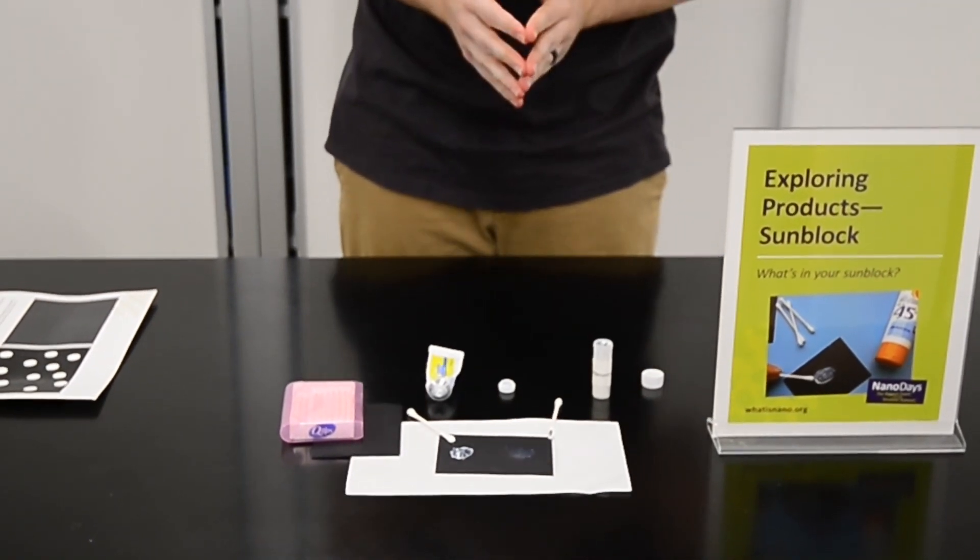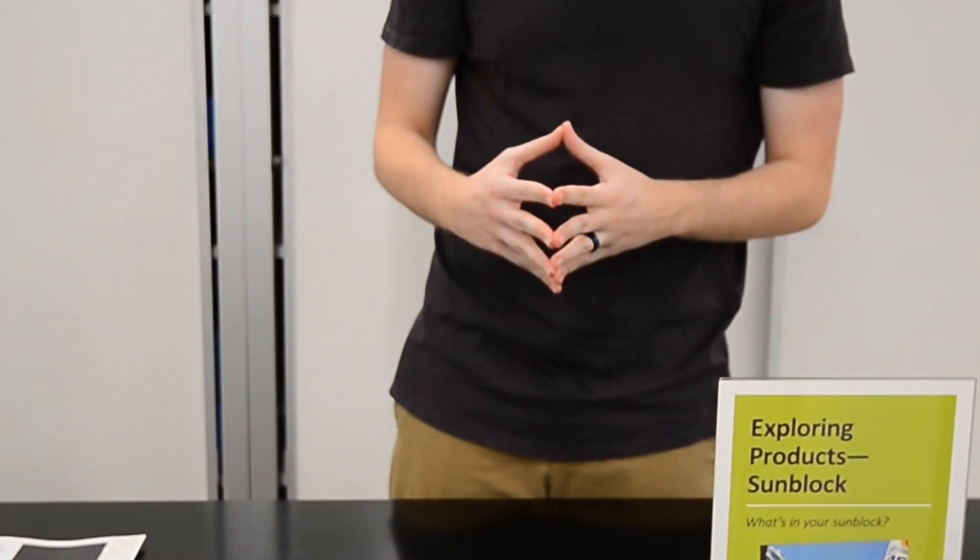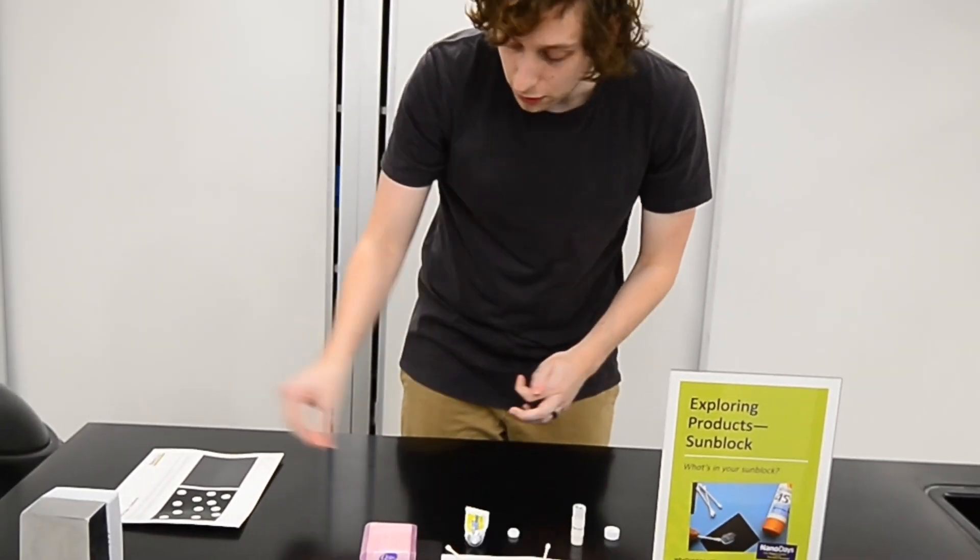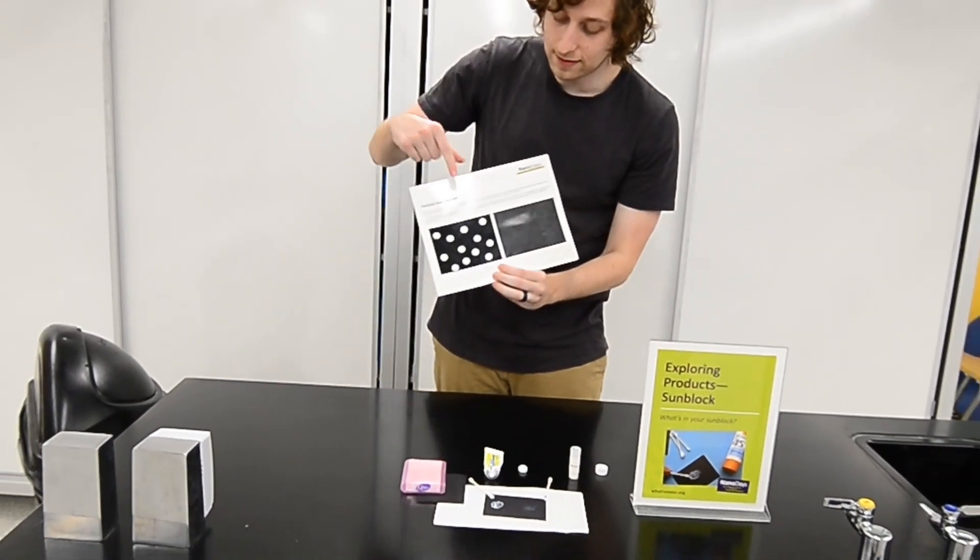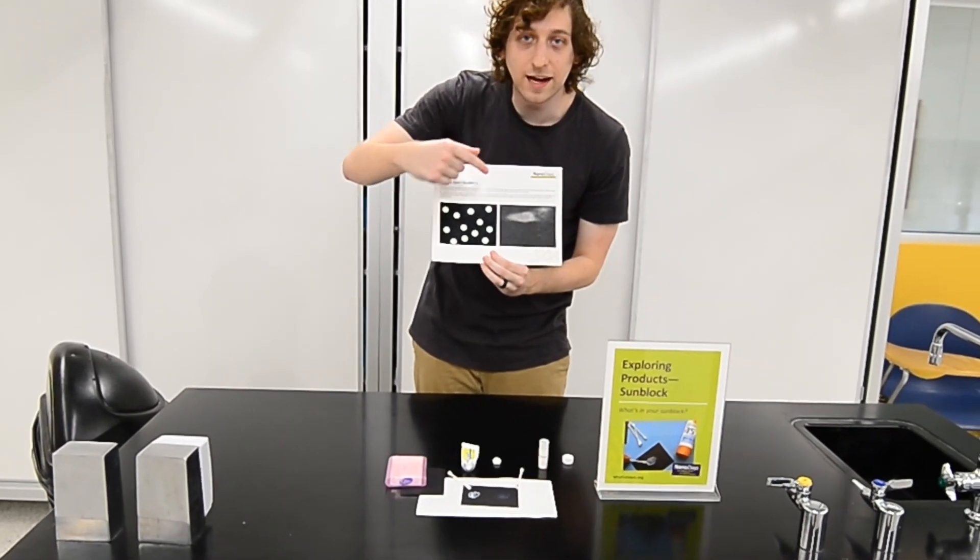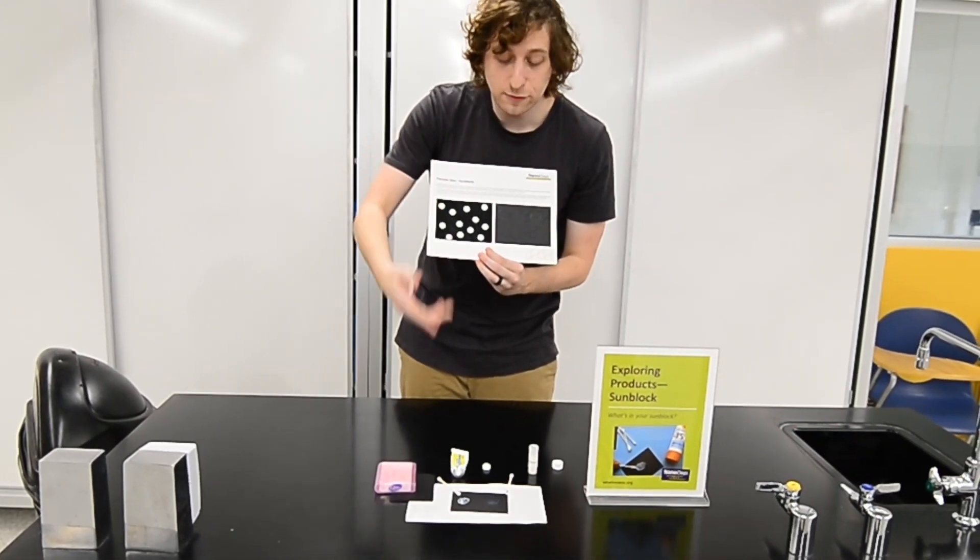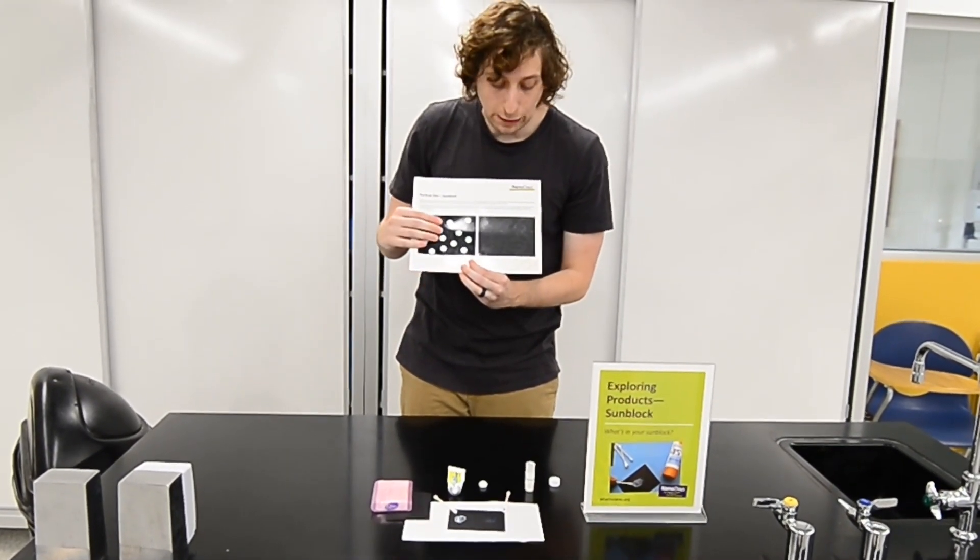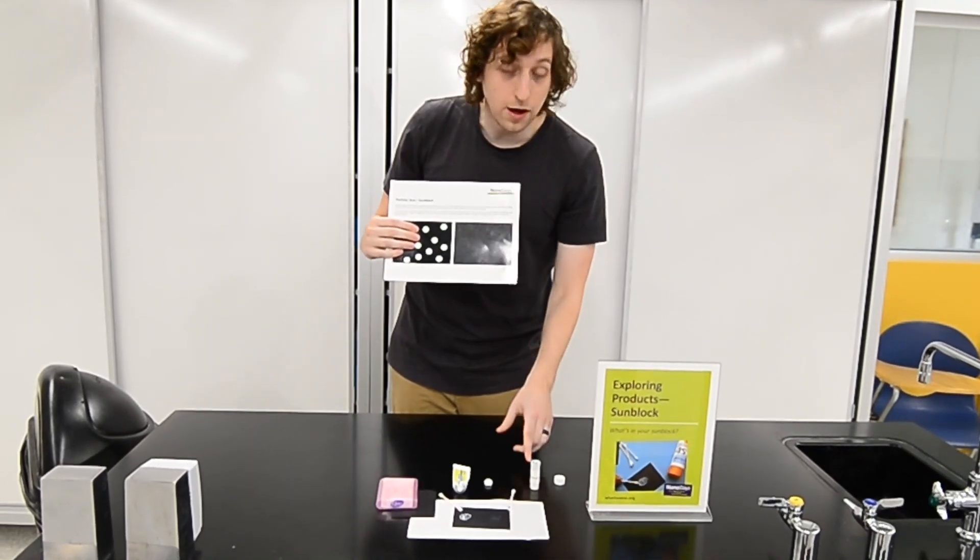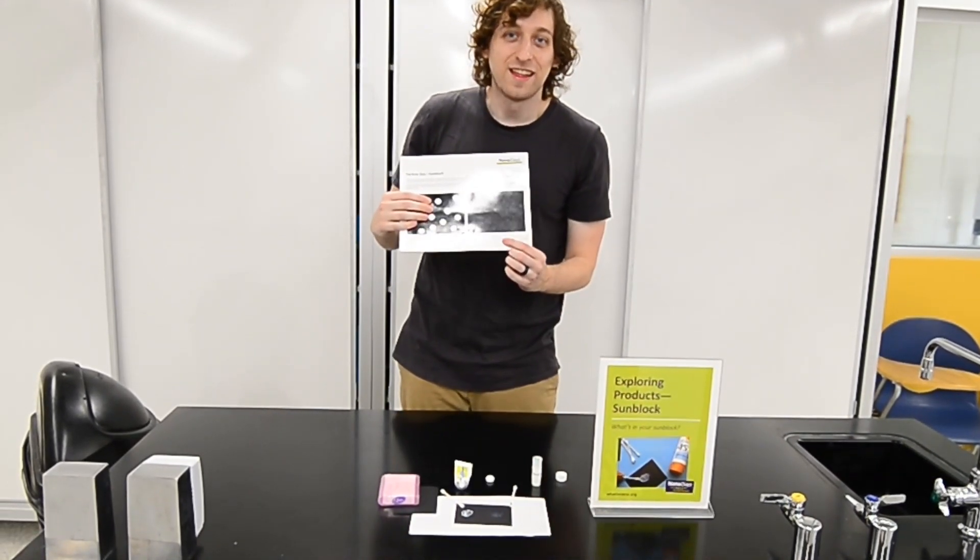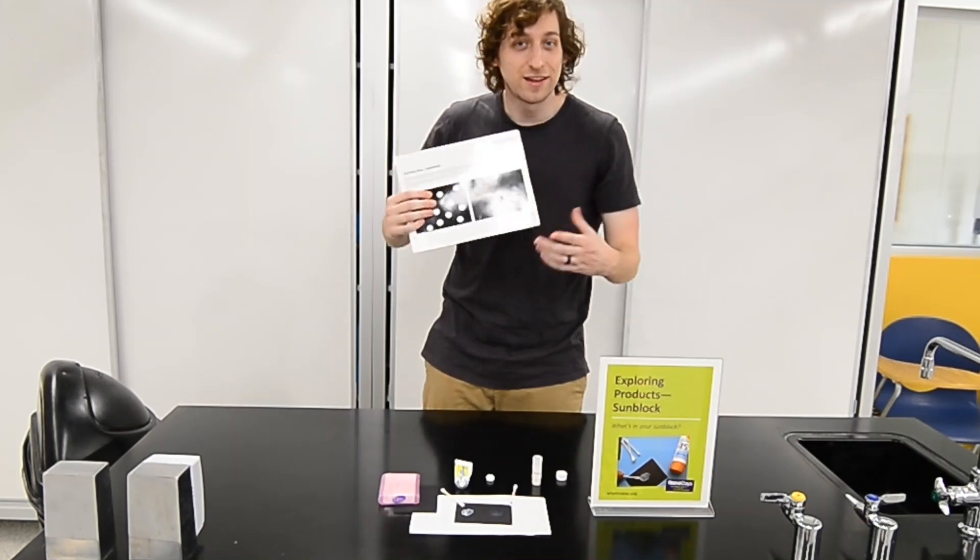Well, the secret to all of this is nanoparticles. You see, these particles here are really large from this sunscreen. They kind of look like this. They're so large, they reflect visible light as white light. That's why it appears white to you. However, these other particles from the other nanoparticle sunscreen, they have really tiny particles, known as nanoparticles.